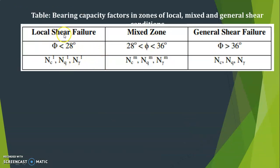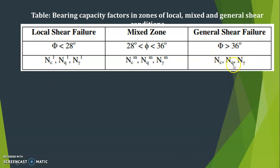For local shear failure (φ < 28°), use the bearing capacity factors N_c', N_q', and N_γ'. For the mixed zone (28° < φ < 36°), use N_cm, N_qm, and N_γm. For general shear failure (φ > 36°), use N_c, N_q, and N_γ — the values from the table shown in the last class. The dashed and mixed-zone values can be obtained by interpolation.